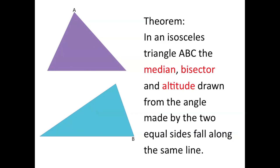Next is the bisector. The bisector is any line drawn from a vertex that bisects the angle. For the purple triangle, if we bisect angle A, we draw a line from the angle to the opposite side, and the two new angles created are equal. Similarly, if we bisect angle B of the blue triangle, we end up with two equal halves of angle B, since the bisecting line cuts the angle in half.